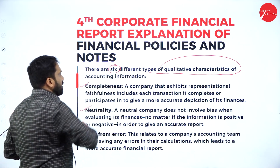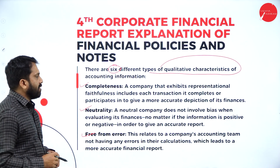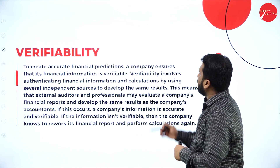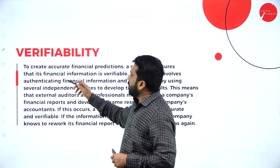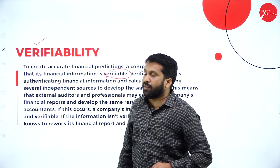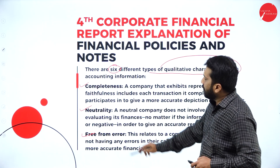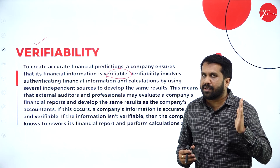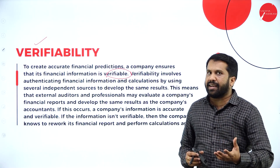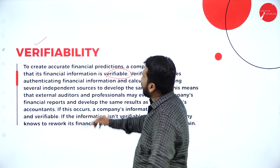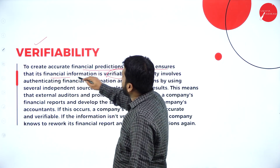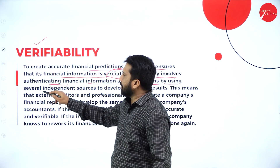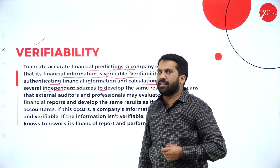The six characteristics are: completeness, neutrality, and free from errors. The fourth is verifiability. Once information is free from errors, the next point is to create accurate financial prediction. A company ensures that its financial information is verifiable — you should verify entries against the original copy, as there may be chances of clerical errors. Verifiability involves authenticating financial information and calculations using several independent sources.